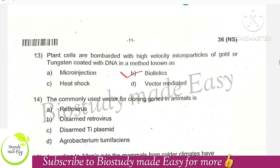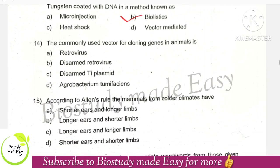The commonly used vector for cloning genes in animals — there is a lot of confusion here, and many might mark disarmed retrovirus right away at first glance, but after reading all options carefully, option B is the right answer: disarmed retrovirus. Don't worry if you got this MCQ wrong; it's tricky.